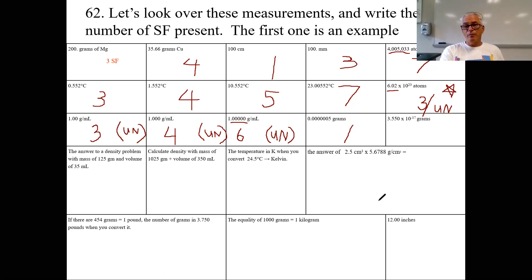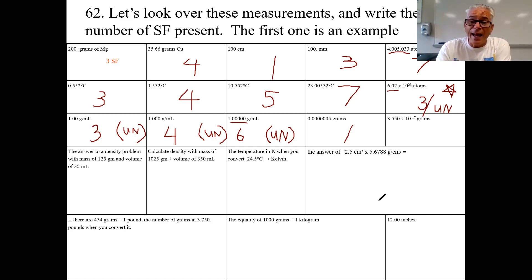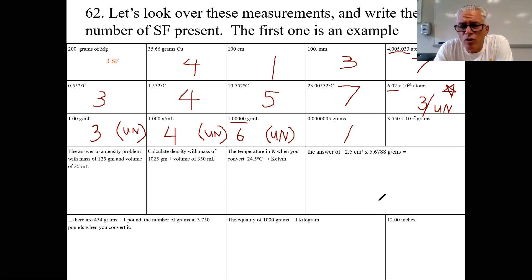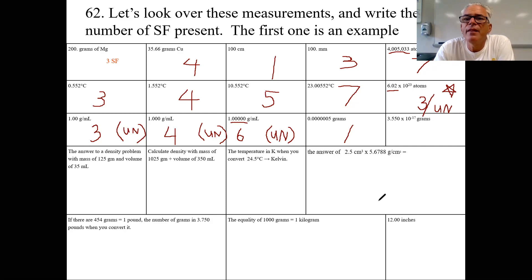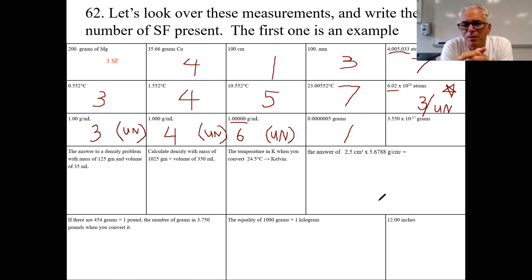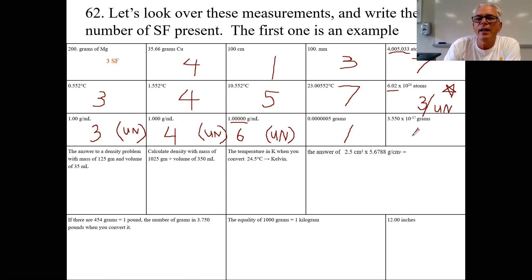That number with all the leading zeros could be written as 5 × 10⁻⁷. And by the way, my birthday is November 4th, which also happens to be National Chocolate Chip Cookie Day. Next: 3.550 × 10⁻¹⁷ grams — an unbearably small value — but we're only looking at the coefficient. That gives us four significant figures; the powers of ten don't matter.